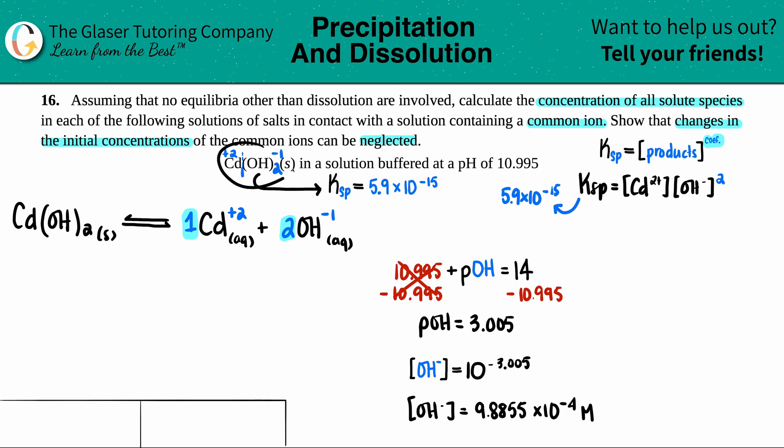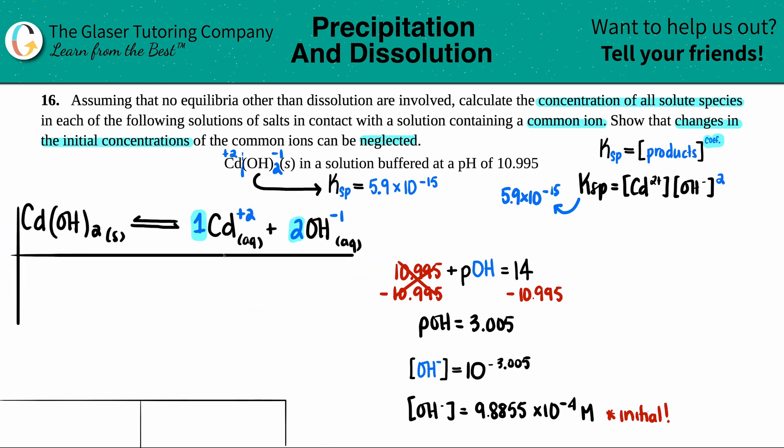Now it says that this compound was in that solution, so this concentration was already there in the beginning because it came directly from that pH. So this has to be the initial concentration of the OH. So whenever they give you that, we have to go back and we have to do an ICE table. I know, I know. So let's just do it quickly.